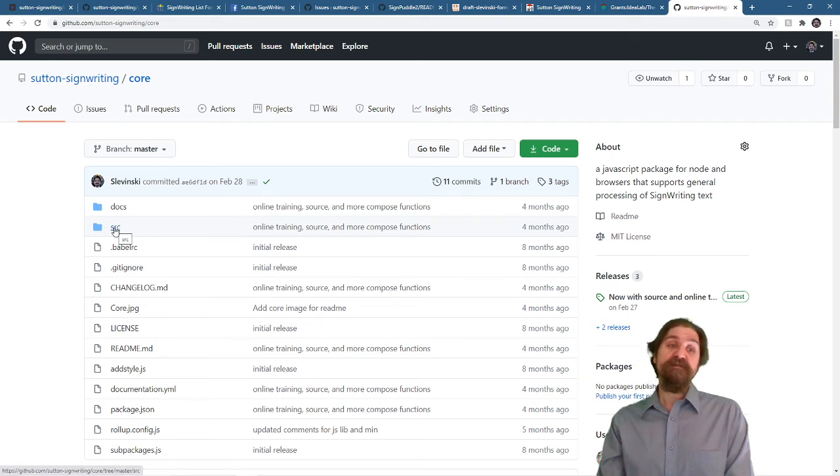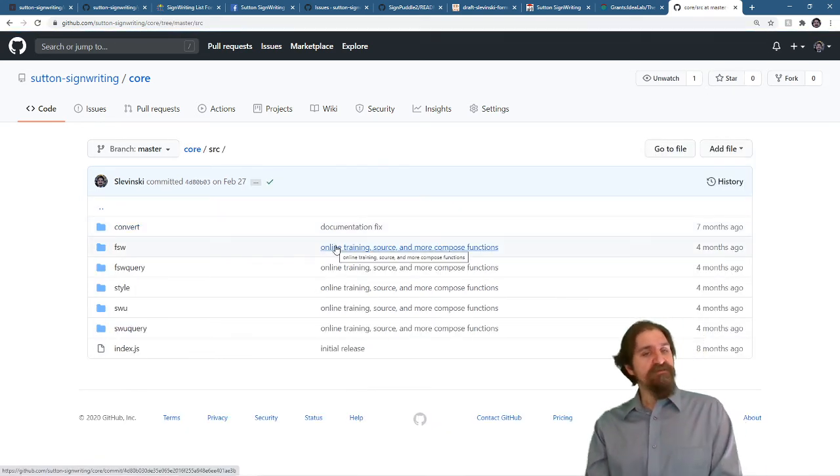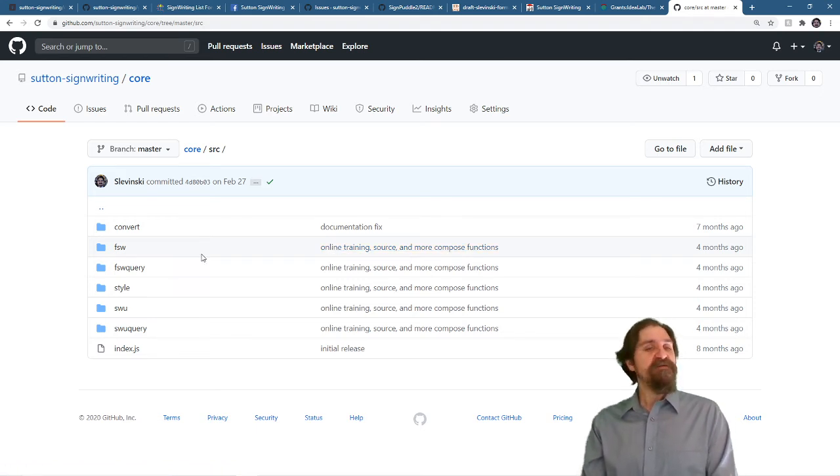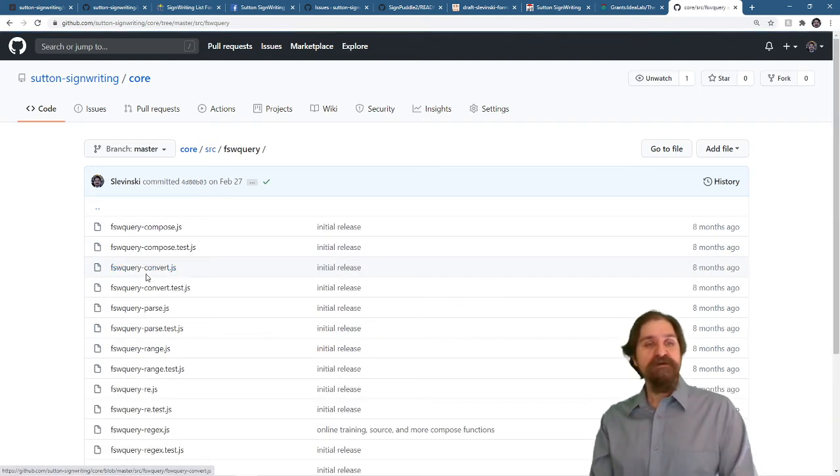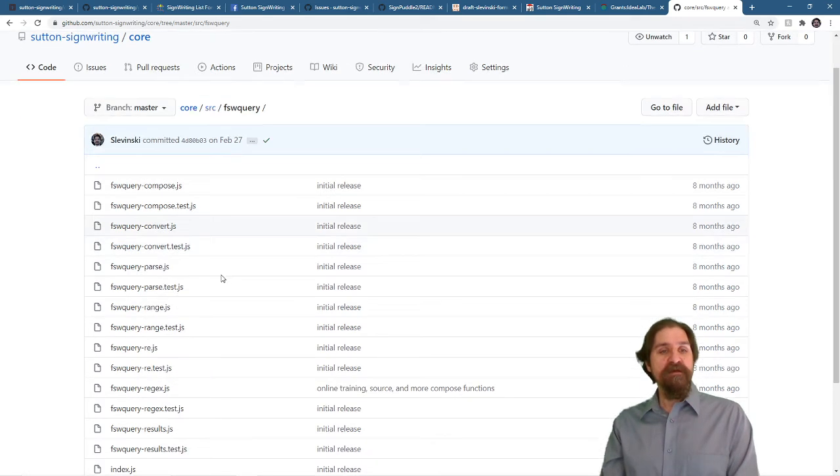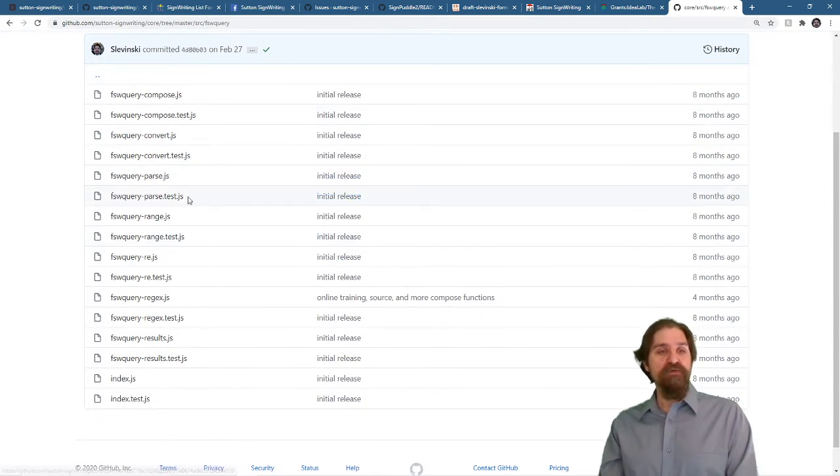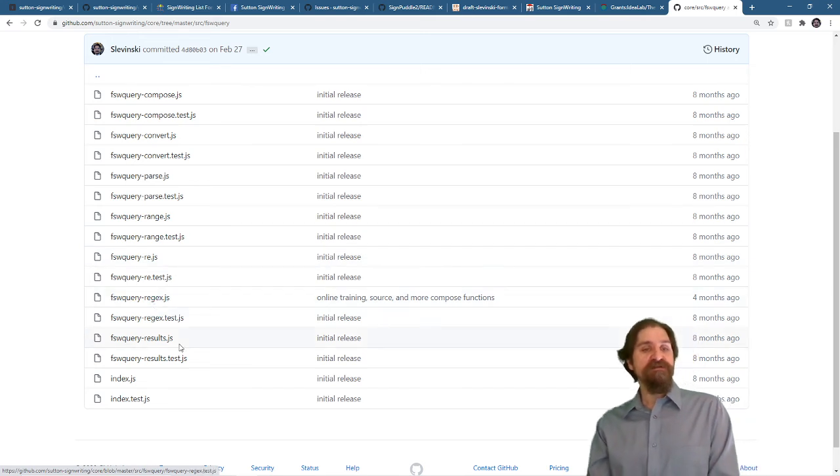The core is specifically you want to look at the source. I think the source is nicely organized and I think the functions are properly organized as well. If you want to help out with this project, there are six functions that need to be rewritten. You can find those three in the FSW query and that would include the range function, the regex function and the results function.